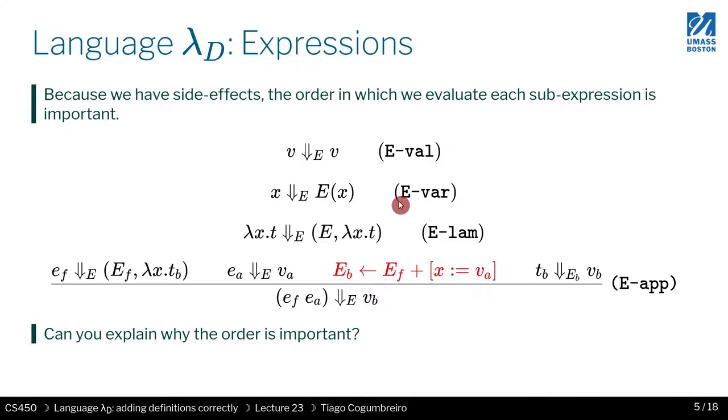So for expressions, everything is mostly the same. Evaluation of a value, you just return that value. Evaluation of a variable is the same as before, as in lambda with substitution. So we just look up on the environment. In a closure, you just return the environment. But here, the environment represents a reference, a reference to the environment, or this mutable environment.